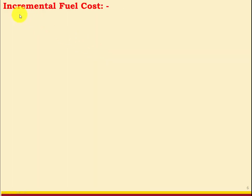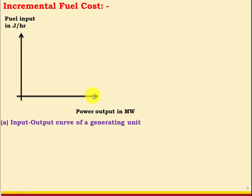An important concept is the incremental fuel cost. This term is very important while deciding the economic load dispatch from various units. To understand it, we plot a graph of input versus output of a generating unit — on the x-axis is power output in MW and on the y-axis is fuel input in joules per hour. As power output increases, fuel input increases in a non-linear curve.